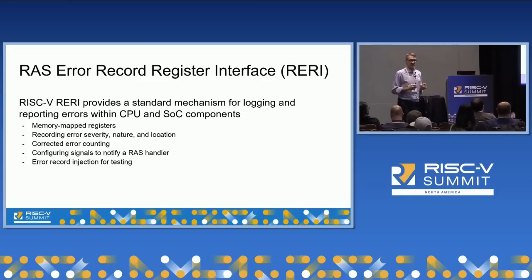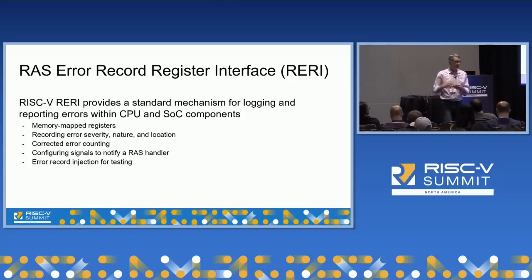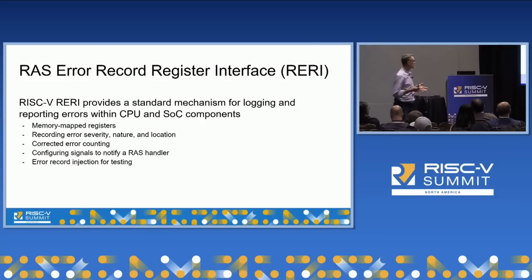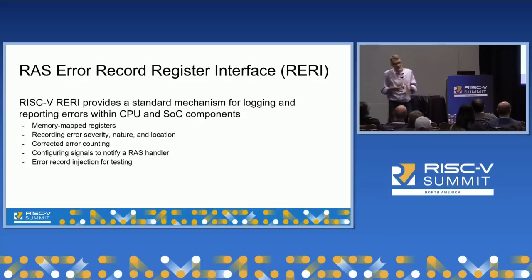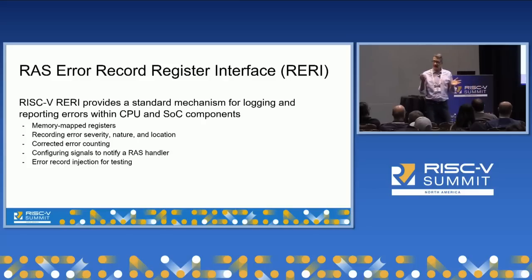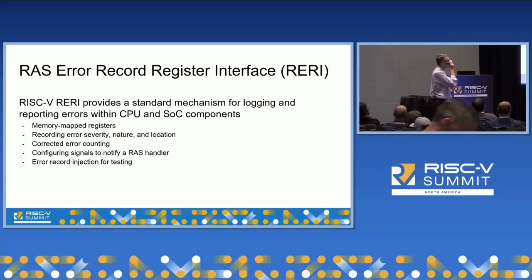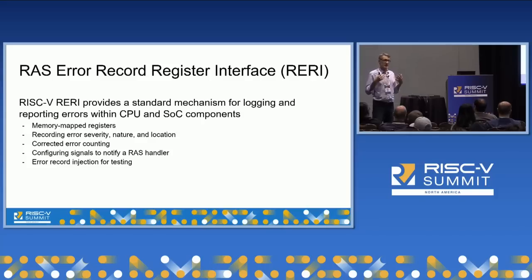RARI is focused on two things: the logging of information about detected errors, and reporting those errors to system software. The RARI standard essentially amounts to sets of memory-mapped registers that record information about errors. It also includes support for counting occurrences of corrected errors, since a rising count can indicate a looming more serious error, giving system software a chance to be proactive. RARI also includes support for error record injection for testing RAS handling software.